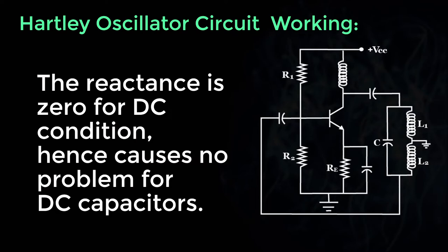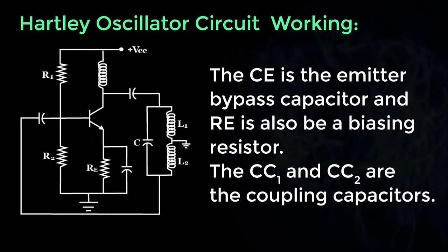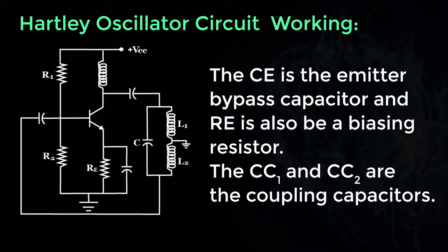Hence, it causes no problem for DC capacitors. The CE is the emitter bypass capacitor and RE is also a biasing resistor. The CC1 and CC2 are the coupling capacitors.